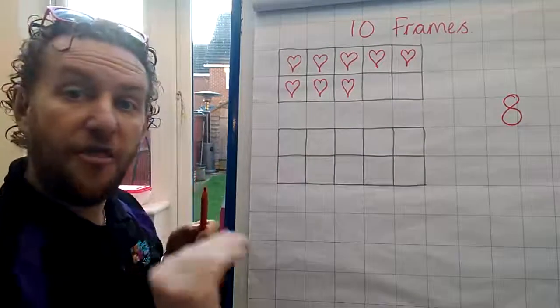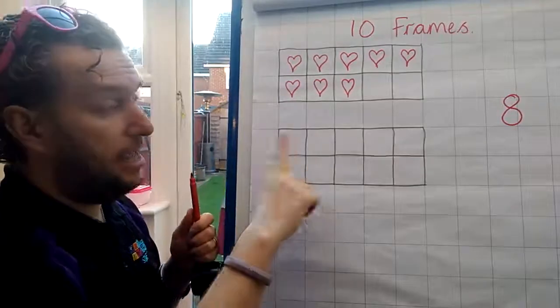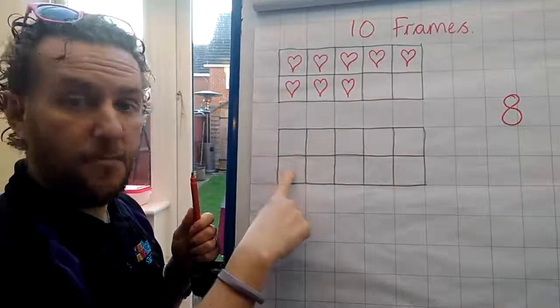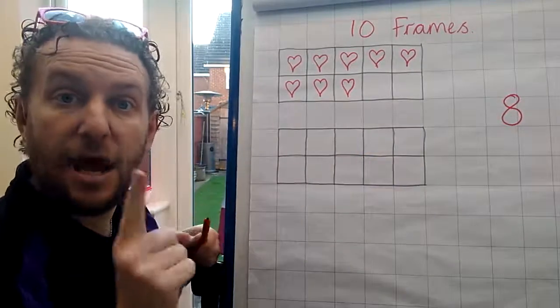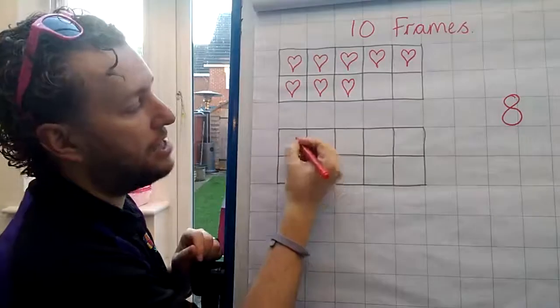Okay. Now, the other way of doing it, like I showed you the other day, is we start here, and then we go here, and we fill in from this side, and we go along. Okay? Until we get to eight. Now, this time, count with me. I'm going to do hearts again. Ready?